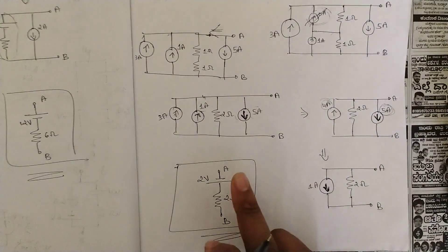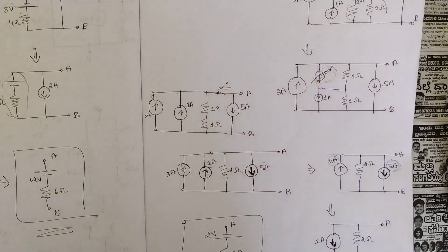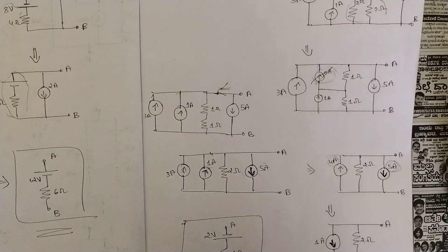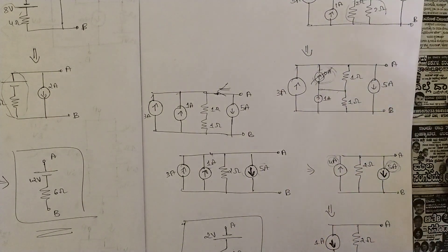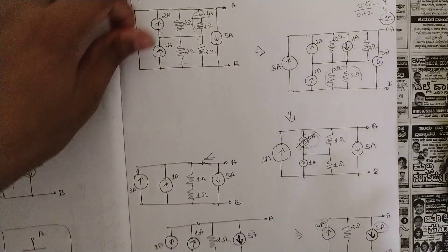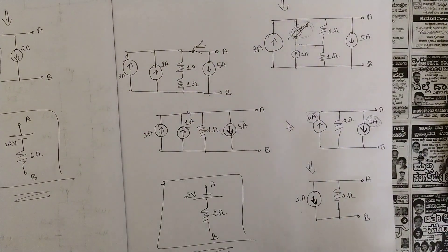So this is the final answer: 2 volts and 2 ohms. Hope these problems are clear. Watch all previous videos if anything is unclear. Like, share, and subscribe — your support is motivating. So far we have covered four videos: two on basic concepts and two on source transformation problems. From the next video we will start a new concept called source shifting. Pause the video and copy this problem. All the best to all backlog students — do well in your exams. Thank you.